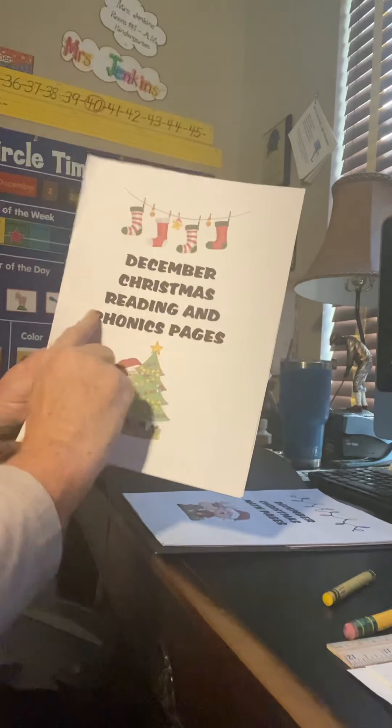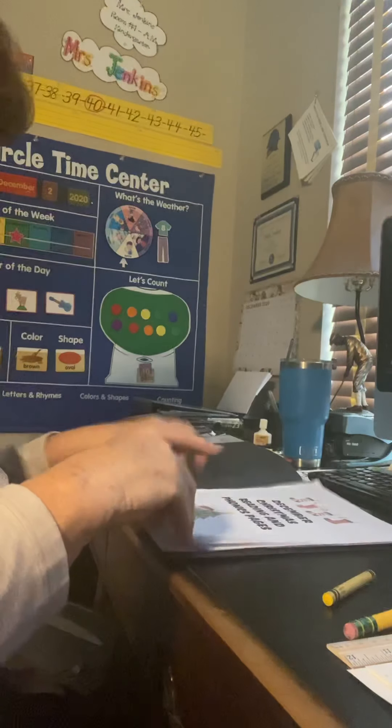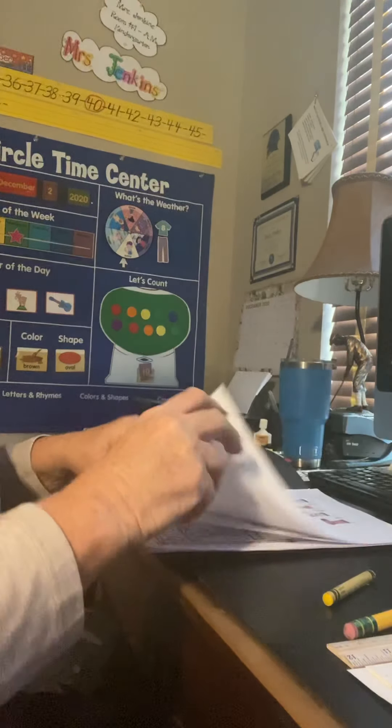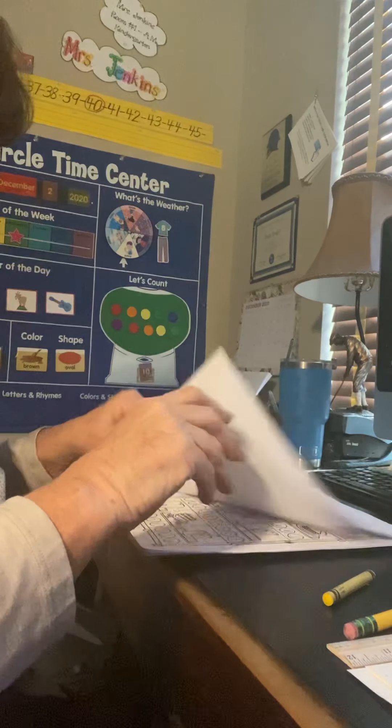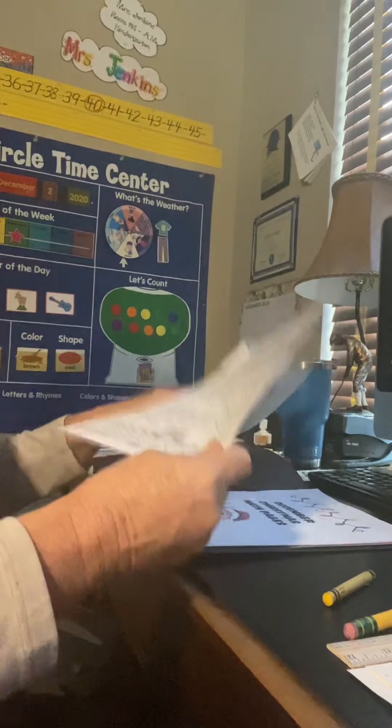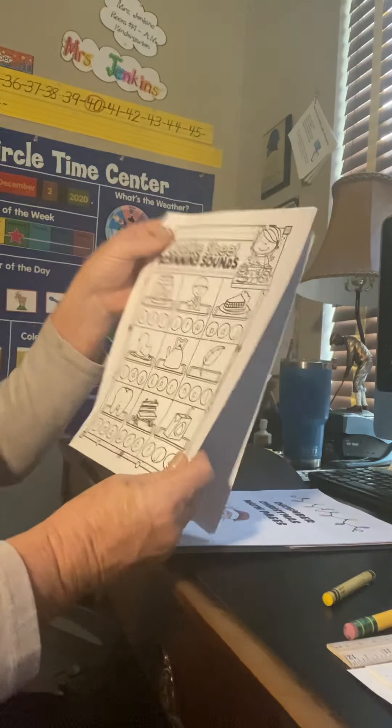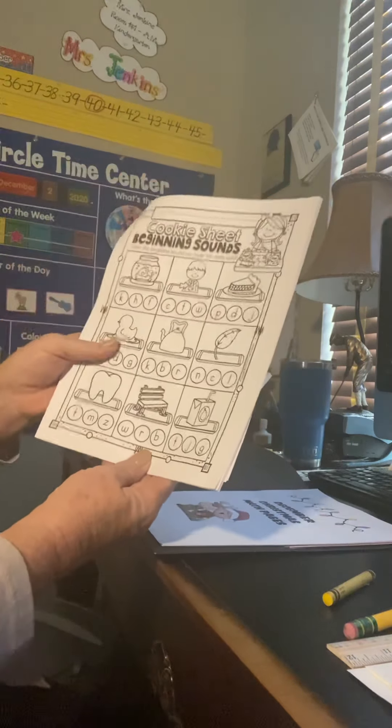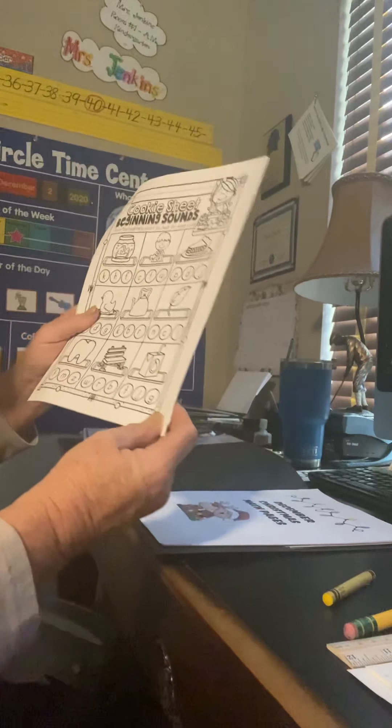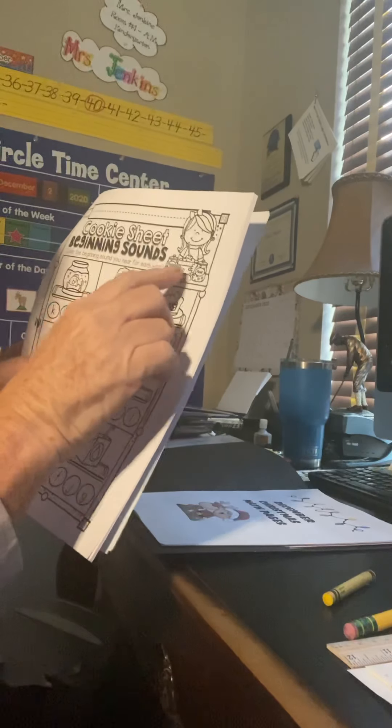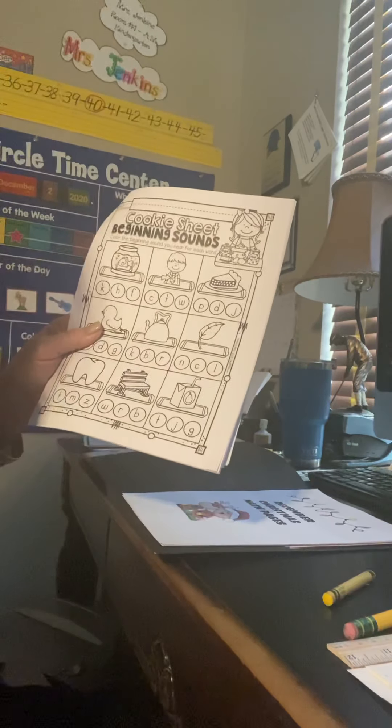This is the reading and phonics pages and we're doing phonics today. Yesterday we did the two pages with capital letters and lowercase letters, writing them. Today we're going to do two more pages and it says cookie sheet beginning sound. I think they're making Christmas cookies. Oh, that looks like fun. Look at the ingredients here. Sugar and flour, eggs and butter. She's making Christmas cookies.